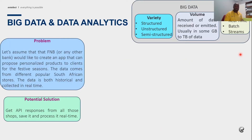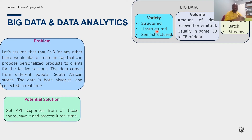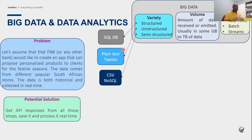Here we're speaking about the velocity of data — how data travels from one side to the other — the volume of data, meaning the amount of data flowing between streams and stored at a single place at a given time, and the variety of data, which can be structured, unstructured, or semi-structured. These are called the Three V's: variety, volume, and velocity.